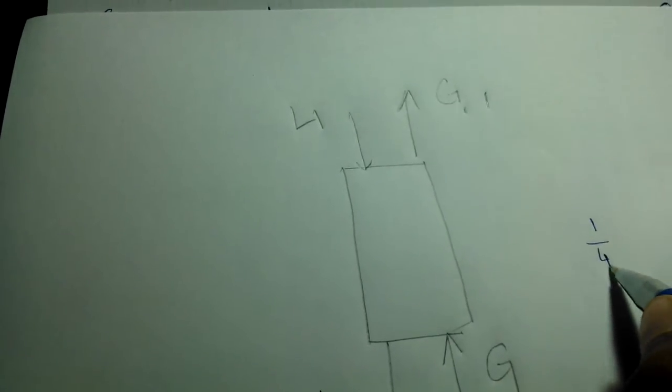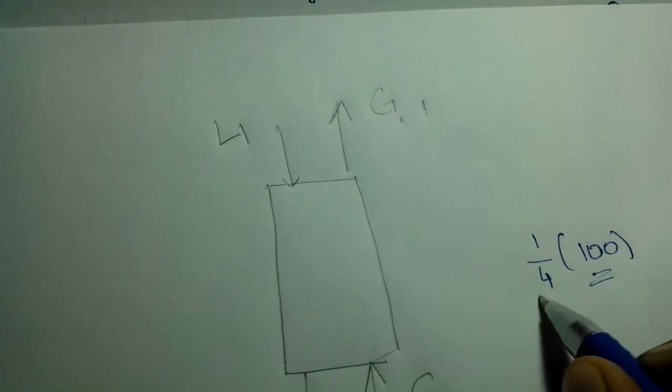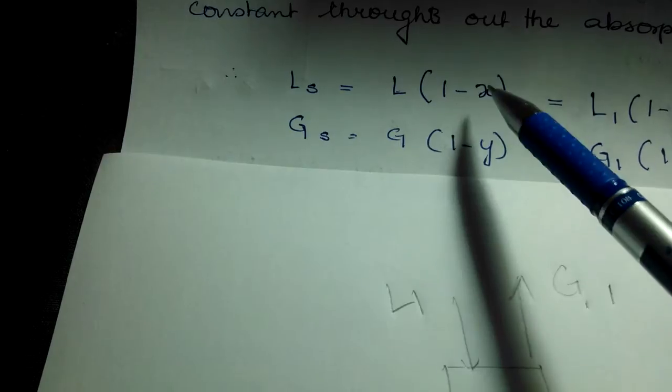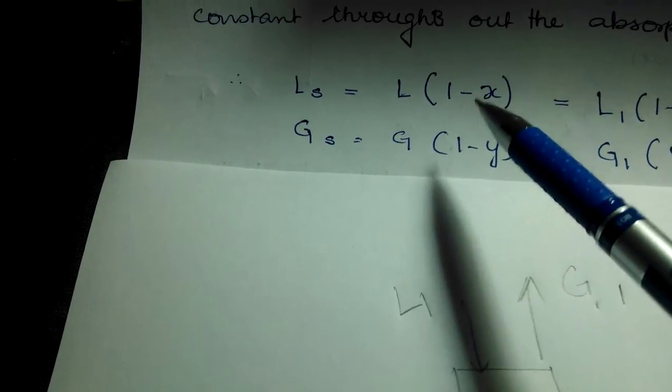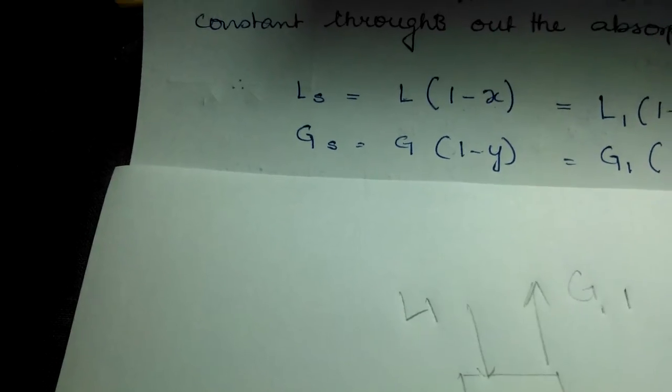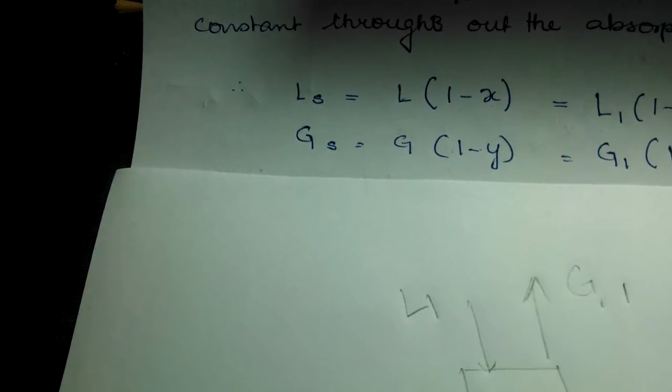When you calculate any kind of fraction, take for example one-fourth of 100 - 100 is the total amount and one-fourth is the fraction. I use the similar principle here. This is the total amount, and 1 minus X is the fraction which will be unreacted, because X is the fraction which is reacting. Based on the diagram, X is the component coming out, meaning it's reacting.